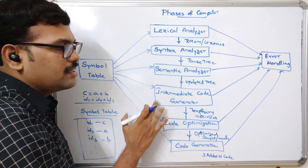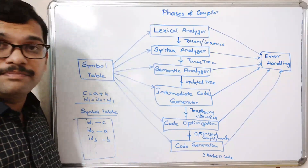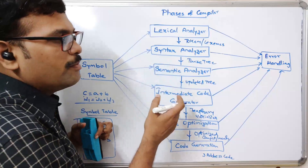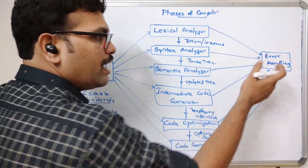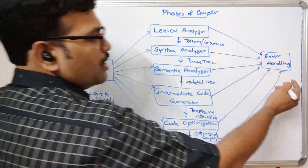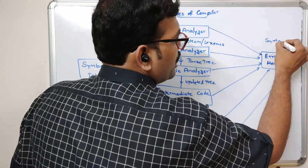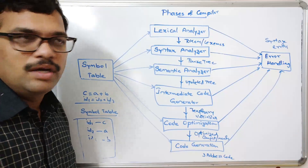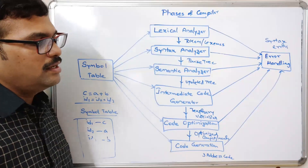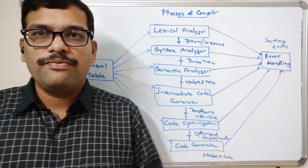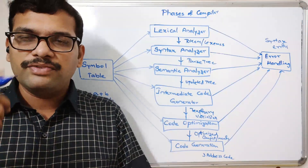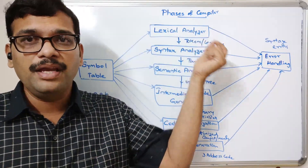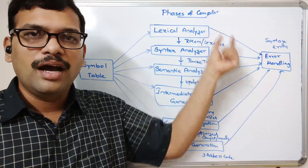So these are the six phases of a compiler: lexical analyzer, syntax analyzer, semantic analyzer, intermediate code generator, code optimization, and code generation. The input comes from the symbol table, and any errors in these stages are handled by the error handler — these are called syntax errors, which are simple to identify and easily solved. In the next session, we'll take one single instruction and see the output from each and every phase.